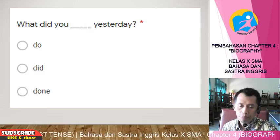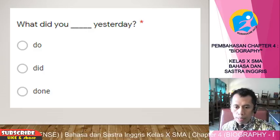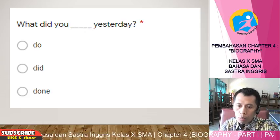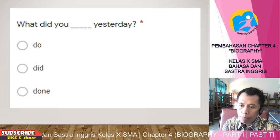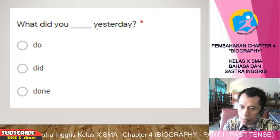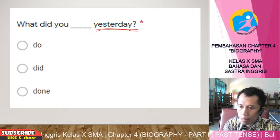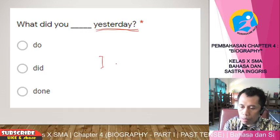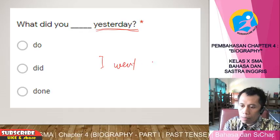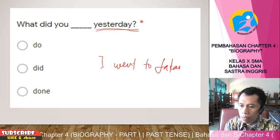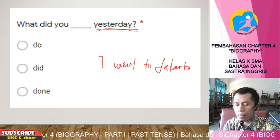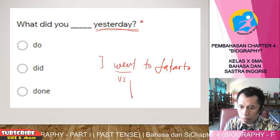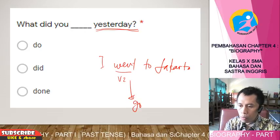Now, let's focus on how to use verb 2. For example: 'Why did you do/did... yesterday?' This is past tense because there is the word 'yesterday' — something happened in the past. For example: 'I went to Jakarta.' This is past tense — verb 2. The base form (verb 1) is 'go,' and the past tense form is 'went.'